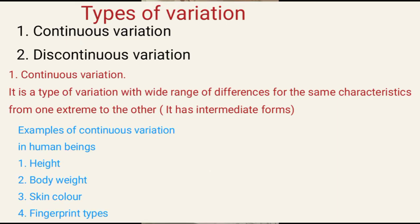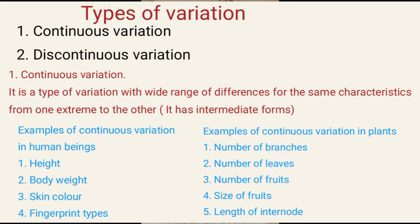Examples of continuous variation in human beings include: height, body weight, skin color, and fingerprint type. Examples of continuous variation in plants include: number of branches, number of leaves, number of roots, size of the fruit, and length of internodes. An internode is a space between two consecutive nodes. A node is a place where a leaf arises.